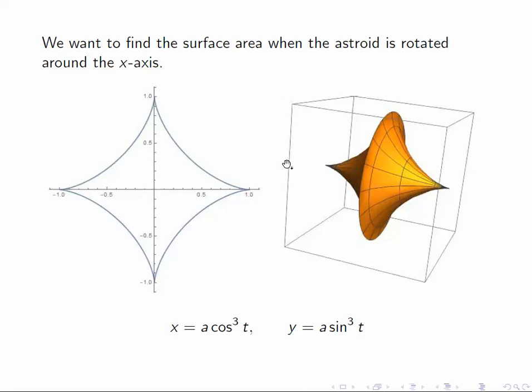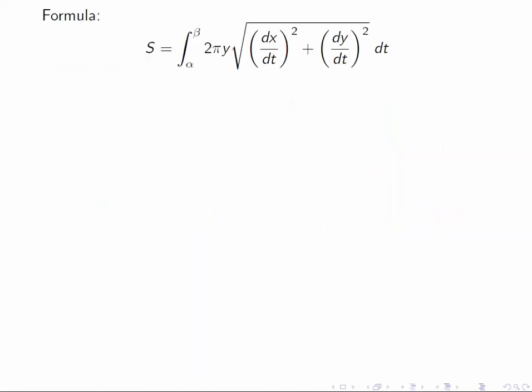So it's very important to establish this range of values of t, because we're going to need to substitute this into this formula. So remember, this is the formula for the surface area. These are the limits here, alpha and beta, the two values of t that define the endpoints of the curve.